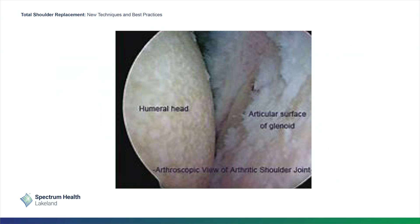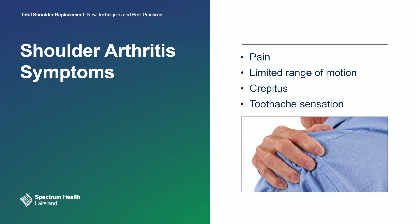This is an arthroscopic view of arthritis. In arthroscopy, we put a scope in the shoulder, and what we can see here is that there is no cartilage remaining — just bone with a dabbling of some cartilage. Typically, people with shoulder arthritis have pain, they lose range of motion, and they feel crepitus — a ratcheting sensation of the shoulder. When my patients come to me with arthritis, they will say that their shoulder is very noisy, and they'll feel this toothache sensation.